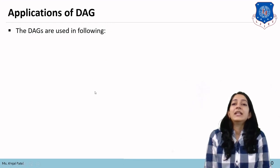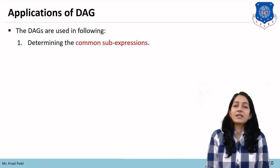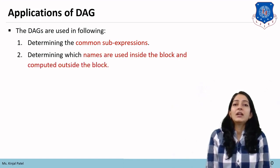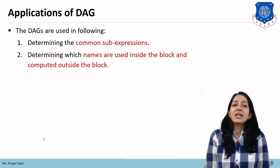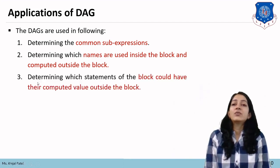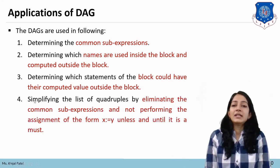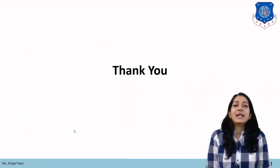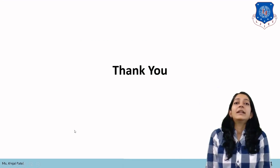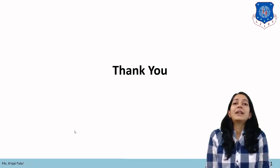Applications of DAG: first, determining common sub-expressions in the block and eliminating them; second, determining which names are used inside the block but computed outside; third, determining which statements of the block could have their computed value used outside the block; fourth, simplifying the list of quadruples by eliminating common sub-expressions and not performing assignments of the form X = Y unless necessary. In this lecture we have learned basic block, flow graph, DAG construction of basic block, and partitioning of basic block.